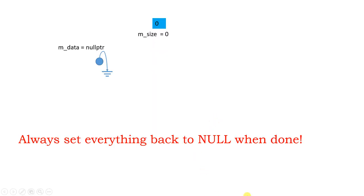After you delete, always set the pointer to null again — religiously do it. Right at that moment, be obsessive: you delete, you set to null. Until you are knowledgeable enough to know when you don't need to, do this to make it safe. For now, you are rookies. You delete, you set to null. This makes it recognizable that the thing is deleted.